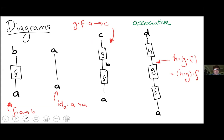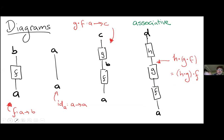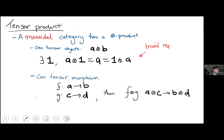There's a nice diagrammatic way to track this: objects are points and morphisms are lines drawn between them. The identity is just a straight line. We compose morphisms by stacking them vertically, and this makes it clear that composition is associative — we can bracket the diagram two different ways but both are equal, so a single diagram represents both possibilities.